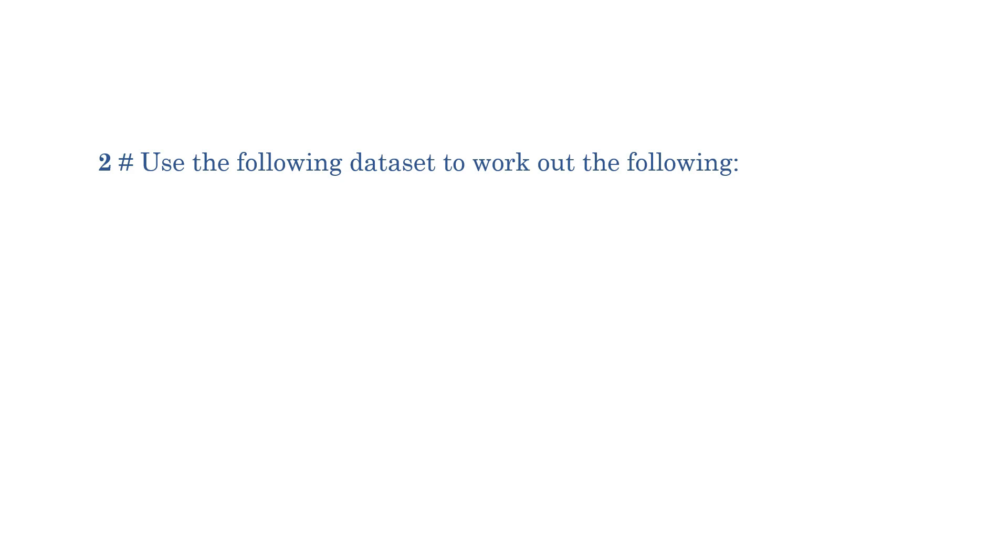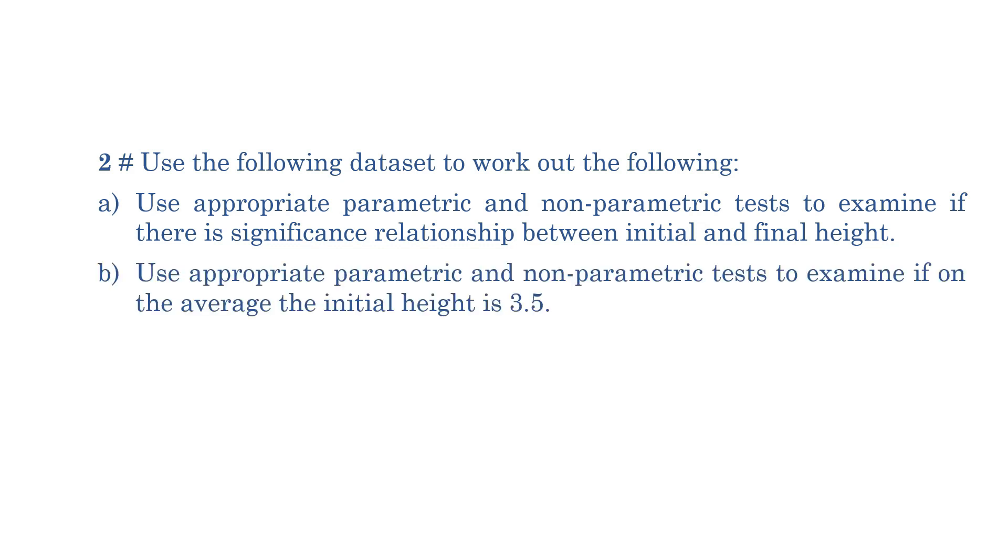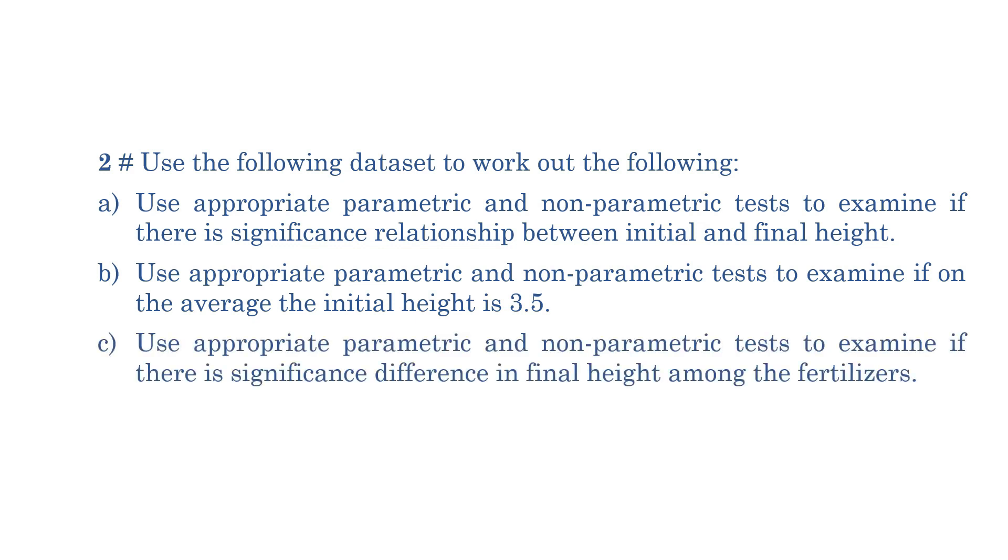Use the following datasets to work out the following. 2a: Use appropriate parametric and non-parametric tests to examine if there is significant relationship between initial and final heights. 2b: Use appropriate parametric and non-parametric tests to examine if on the average the initial height is 3.5. 2c: Use appropriate parametric and non-parametric tests to examine if there is significant difference in final height among the fertilizers. Kindly focus on the terms that are underlined. This will help us decide what kind of tests to use.